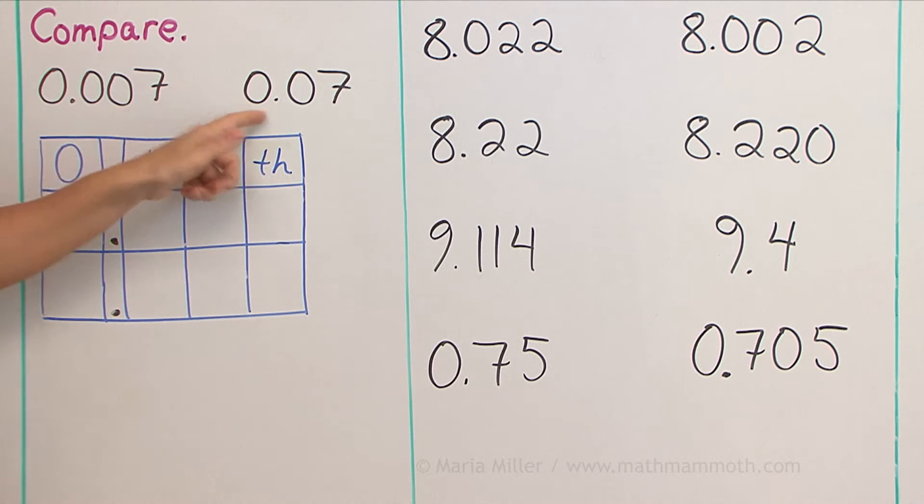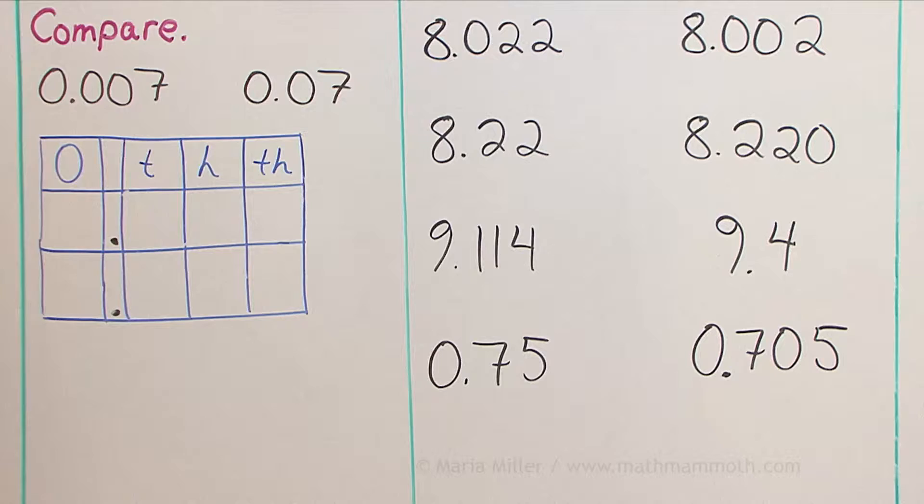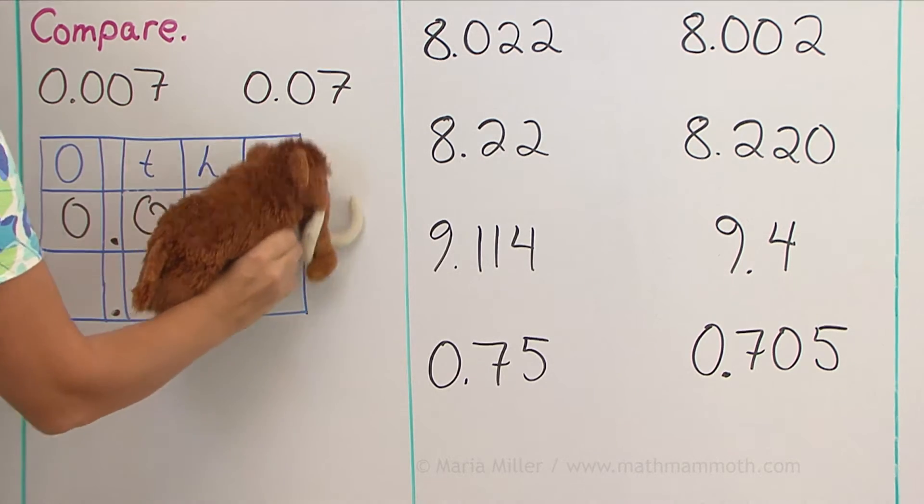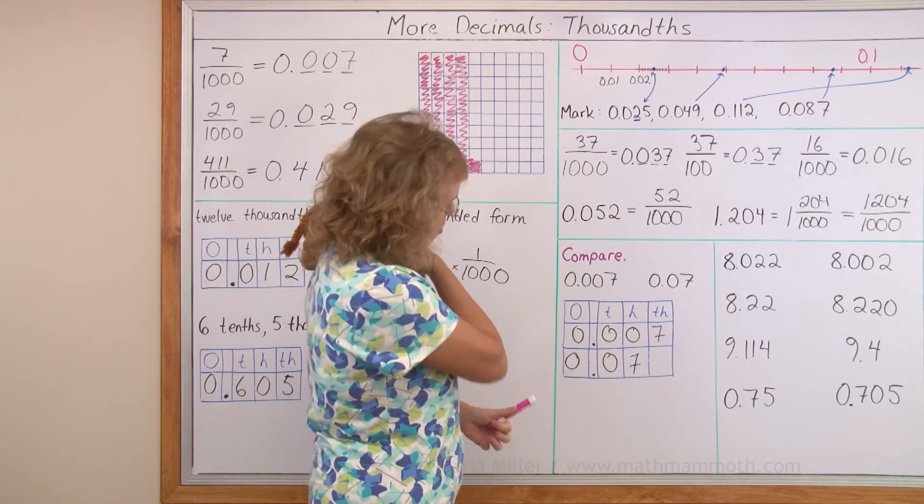But that's wrong, as you can guess. Let's write these two numbers into the place value chart to see how they compare. And Matthew, it's going to be your turn, okay? Okay, you got it right, yeah, but a little sloppy.